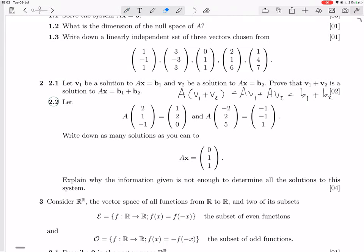2.2: Let A times (2, 1, -1) equal (1, 2, 0), and A times (-2, 2, 5) equal (-1, -1, 1). Write down as many solutions as you can to Ax equals (0, 1, 1).